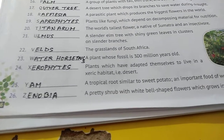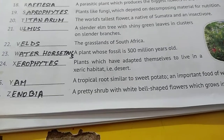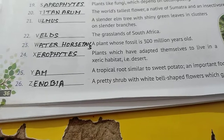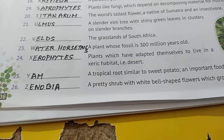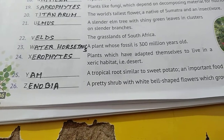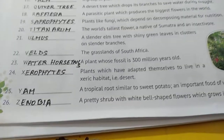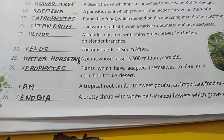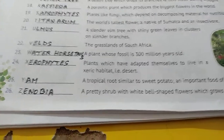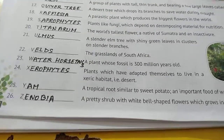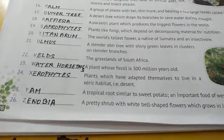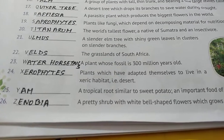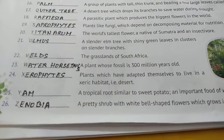Number twenty-two: the grasslands of South Africa — that must have been covered in your SST book as well. The South African grassland is called the veld.